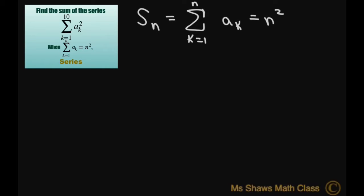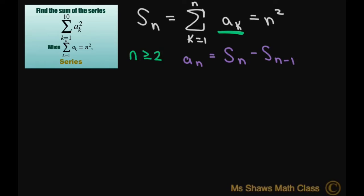Let's look at two cases to solve for a sub k. We need to know what a sub k is. If we have at least two terms, so n is greater than or equal to 2, let's look at a sub n. a sub n is going to equal the sum of all the terms minus the sum of all the terms minus that last term.